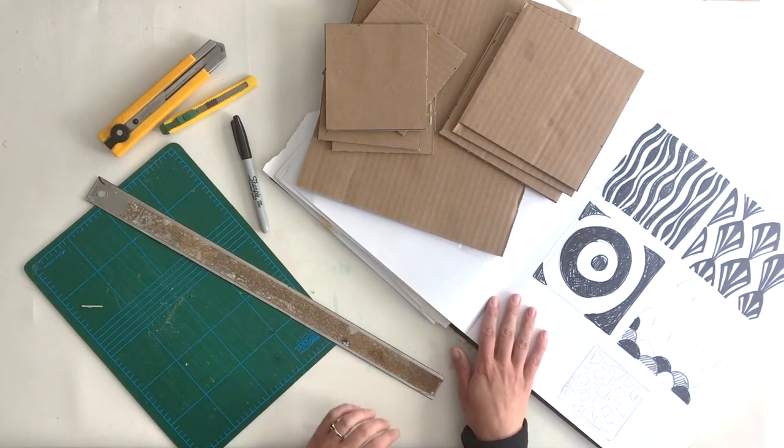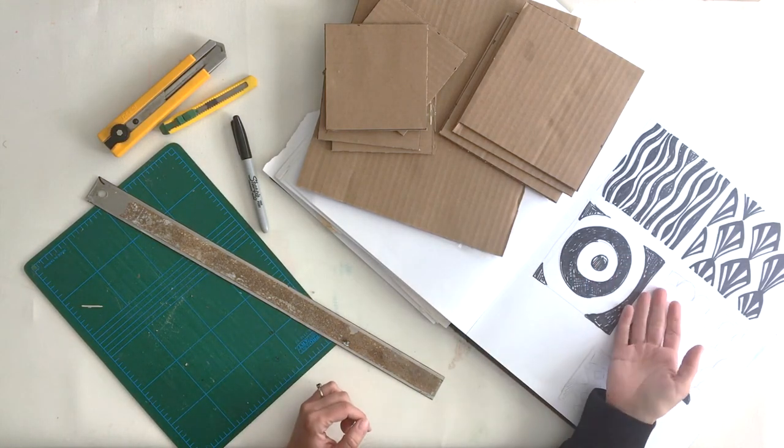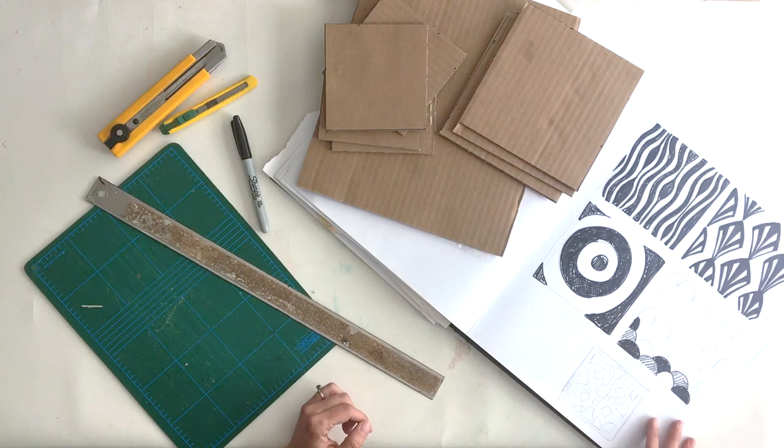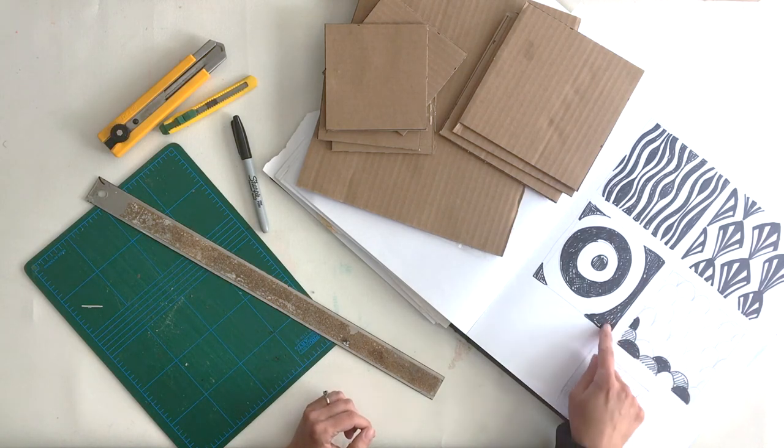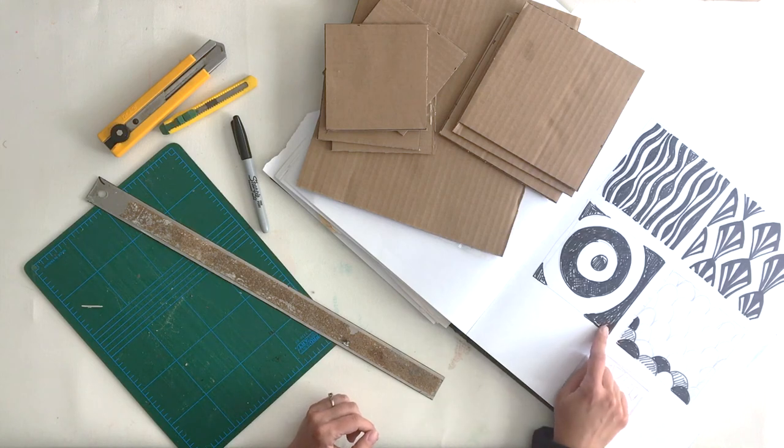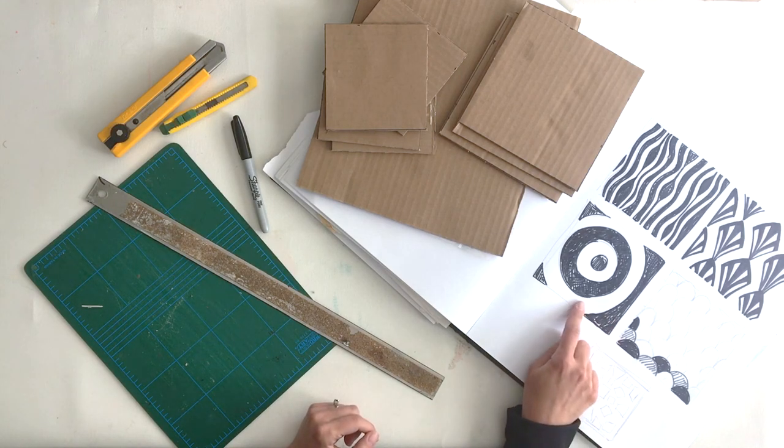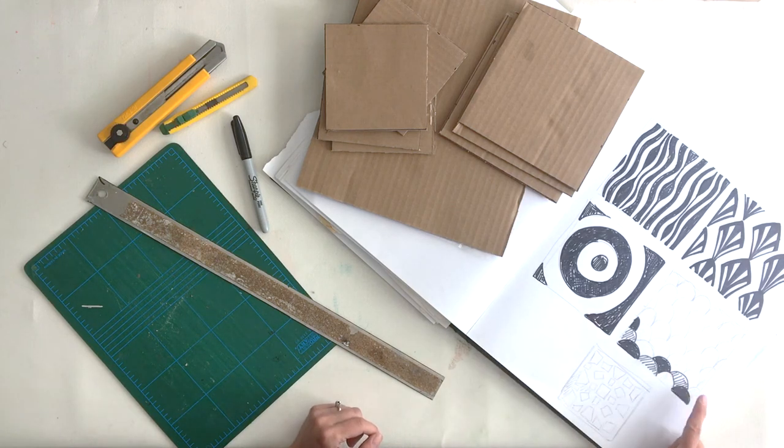The materials you will need for this project are a simple design. Make sure you've divided your image by negative and positive space. Your final product will have only two values: a solid color, the positive space, and the corrugated pattern of the cardboard, the negative space. A design like this one with white, grey, and black will not work for this medium.